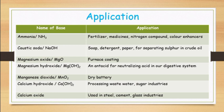Caustic soda is also used for separating sulfur in crude oil. The application of magnesium oxide: because it is hard and resistant to fire, magnesium oxide is used as furnace coating. The application of magnesium hydroxide: magnesium hydroxide is used as an antacid for neutralizing acid in our digestive system. More applications of bases can be found by searching the internet.